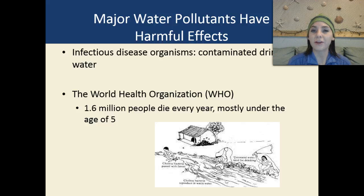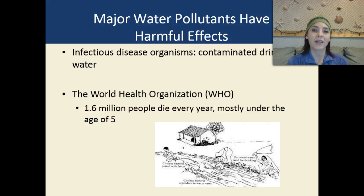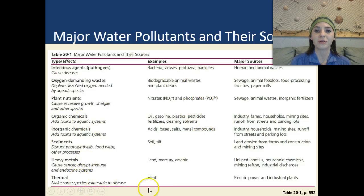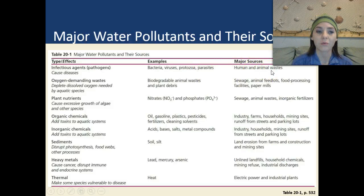Major water pollutants have very harmful effects on humans as well as other animals. We have infectious disease organisms that we can get from contaminated drinking water. The World Health Organization estimates that over 1.6 million people every single year die before the age of five because of polluted water sources. I want you to write down all of these examples and types into your notebooks. We're going to look at the type of water pollution, the effect it has, examples, and where those sources actually come from.